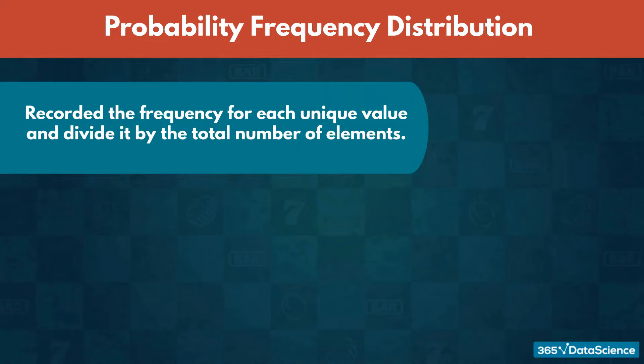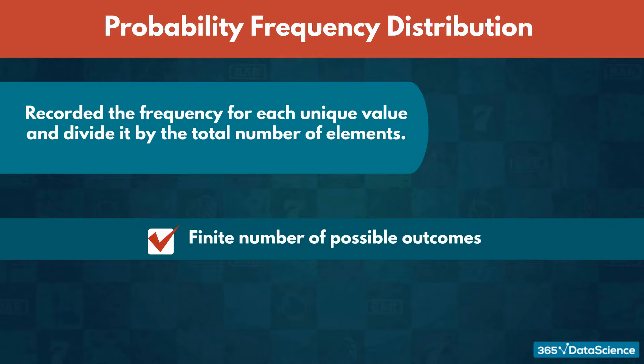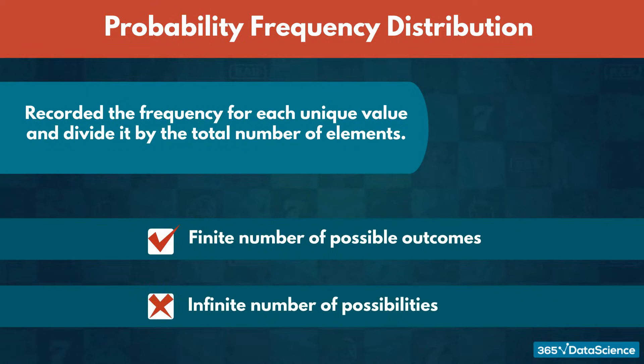Usually, that is the way we construct these probabilities when we have a finite number of possible outcomes. If we add an infinite number of possibilities, then recording the frequency for each one becomes impossible because there are infinitely many of them.